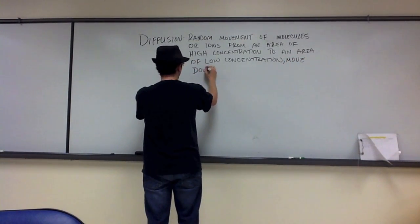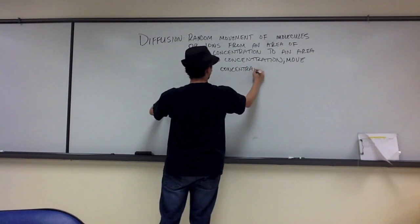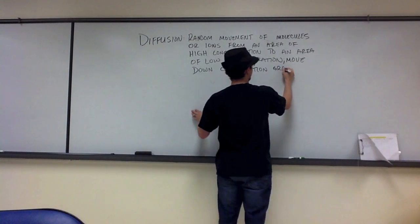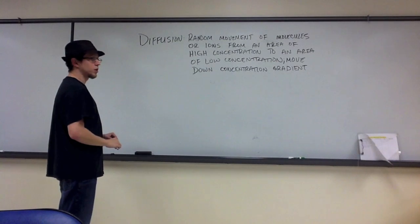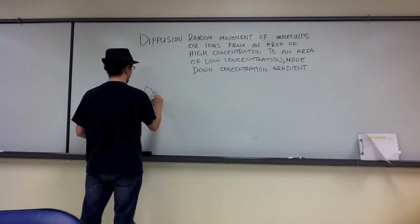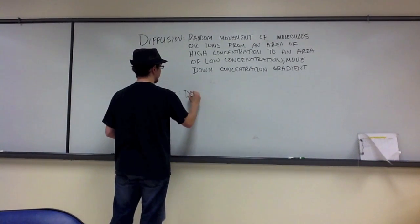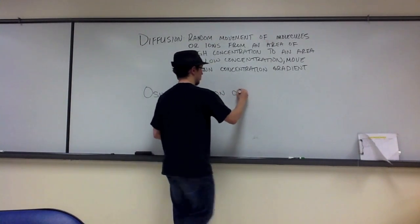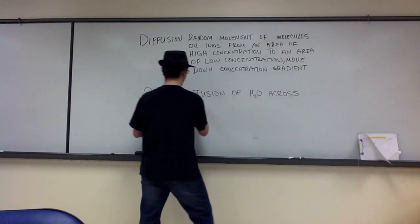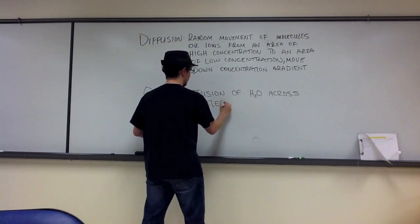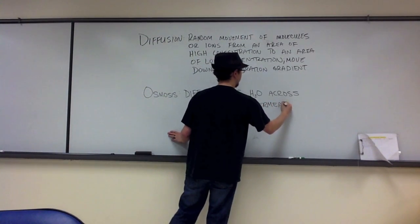They move down their concentration gradient. Osmosis is defined as the diffusion of water across a selectively permeable membrane.